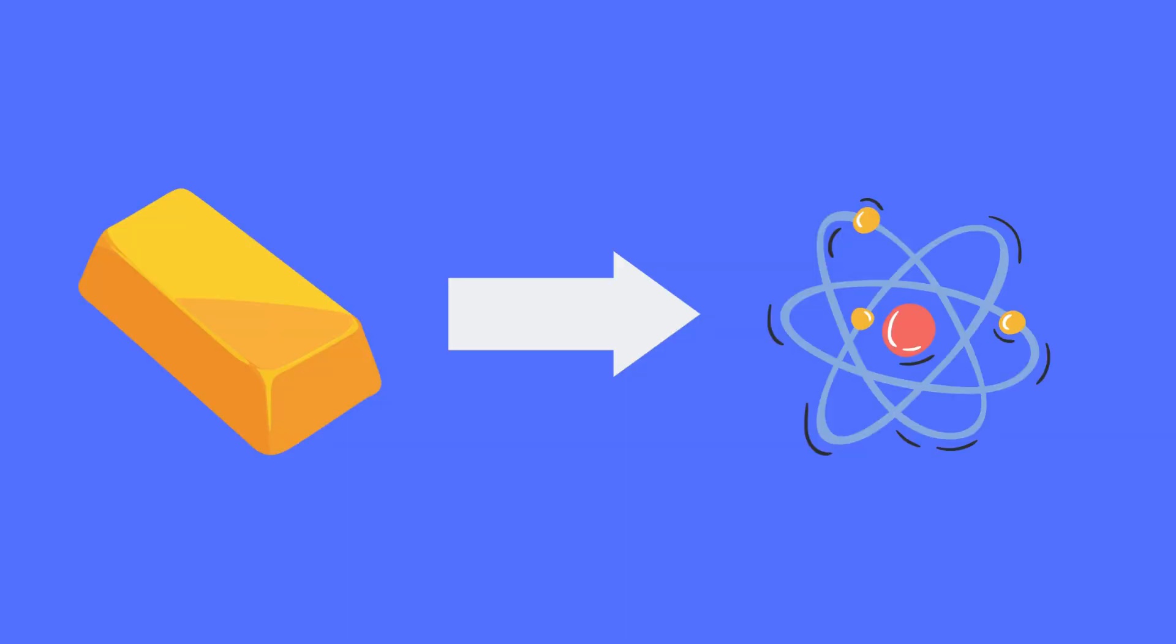The smallest unit of these elements are called atoms. Each element has its own atom, and each element's atom has different properties unique to that element.